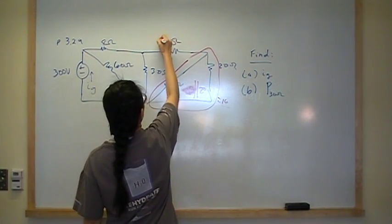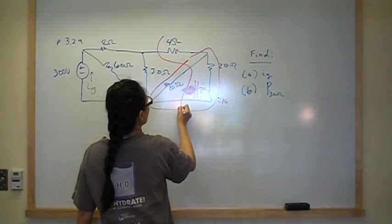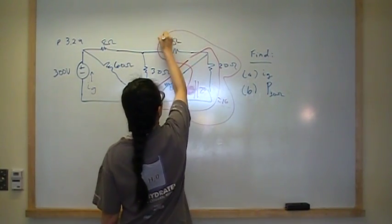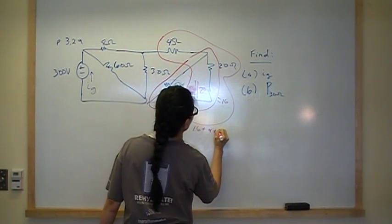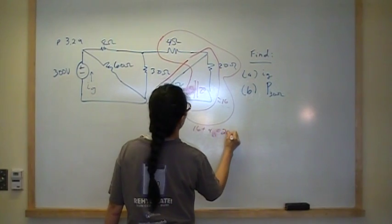16, this branch right here is 16, 16 plus 4, which is equal to 20 ohms.